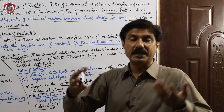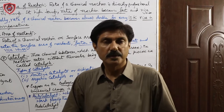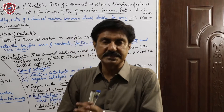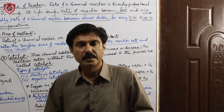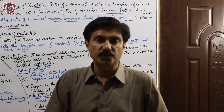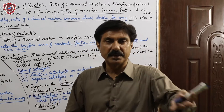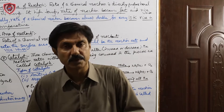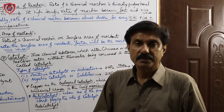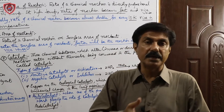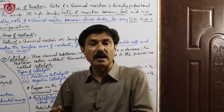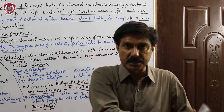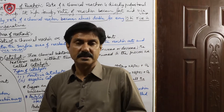Another term used is auto-catalyst, where 'auto' means self. Sometimes in a reaction, without adding any special catalyst, as the reaction proceeds and products start forming, one of the products itself begins to catalyze and control that same reaction. Such a catalyst is called an auto-catalyst — the reaction produces its own catalyst. You start the reaction without catalyst, but as soon as the reaction begins and products form, one product starts catalyzing the reaction.